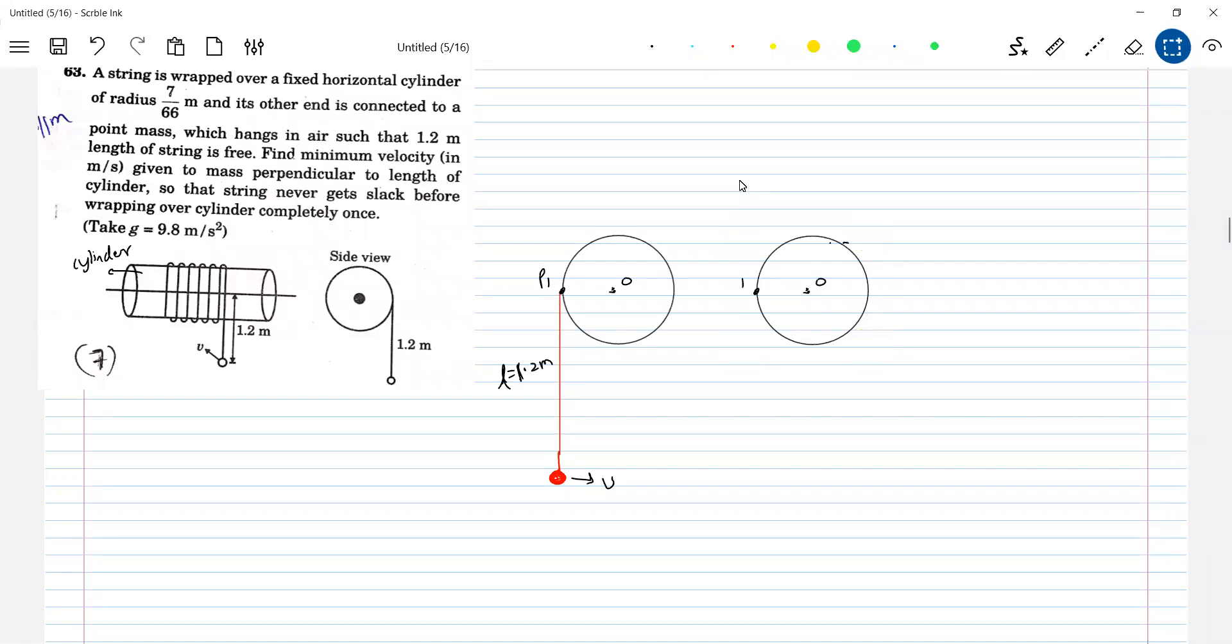Okay, now that's the same diagram. You can see the point P1, everything are same. Now the string should wrap like this. And here, because some string, if it wraps, this will be the situation. Earlier length was L. So now how much of length will be? It will be L minus pi R.